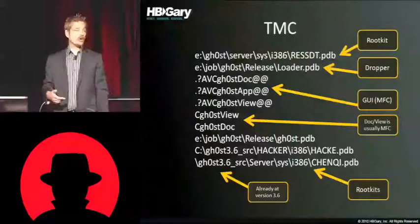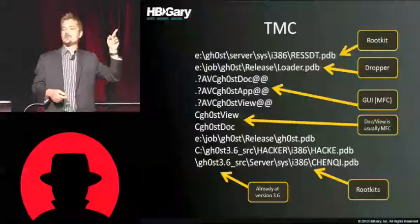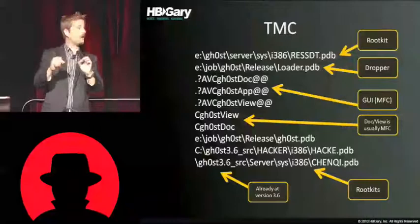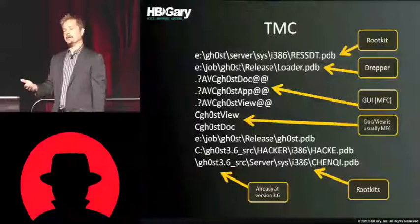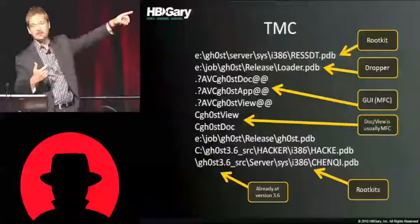Up here I see dot question mark AVC — that means that thing has a user interface. Those samples are probably the other side of Ghost, the actual remote control application itself. When you see C ghost view and C ghost doc, if you've programmed in MFC, those are from a document-view architecture. Somebody wrote an MFC-based UI to drive this thing, and that was sitting in our archive.